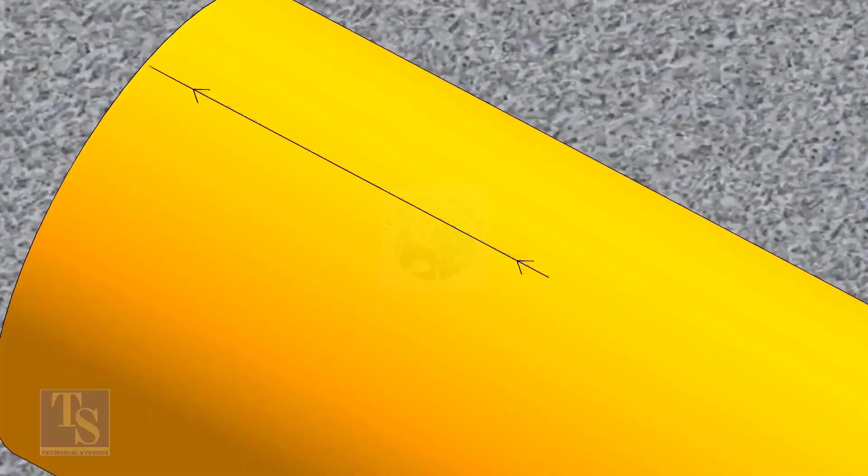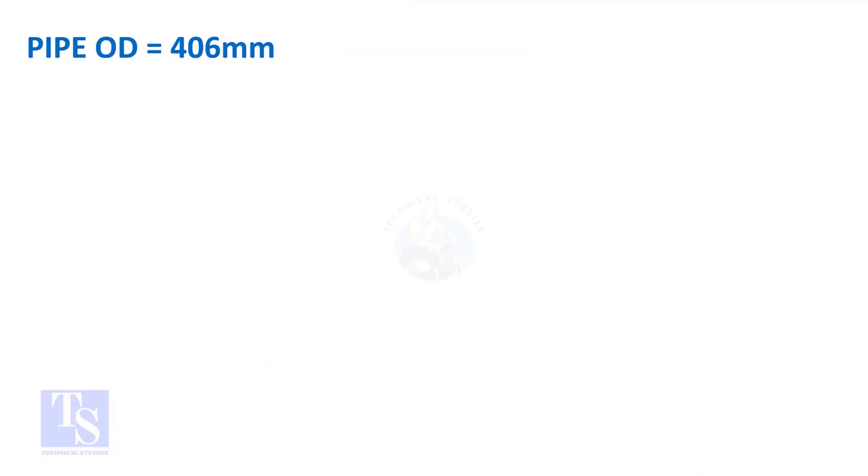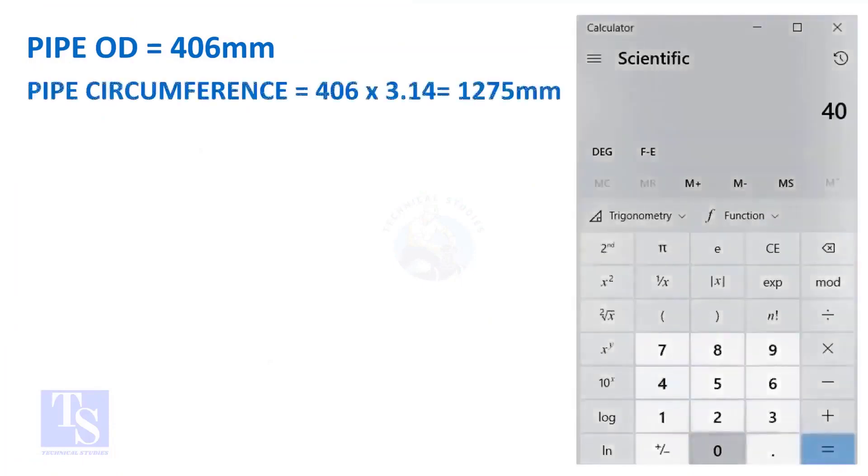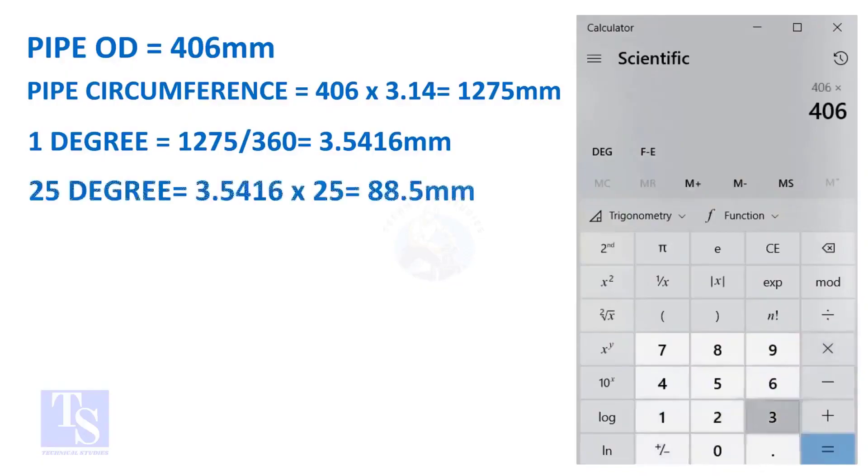Let us calculate the circumferential distance or arc length for 25 degrees. Multiply the OD by 3.14, you will get the circumference of the pipe. Divide the circumference by 360, you will get the arc length of 1 degree. And finally, multiply the 1 degree arc length by 25. Now you have the arc length of 25 degrees. You can apply this formula to get the arc length of any degree.